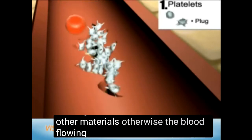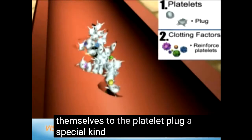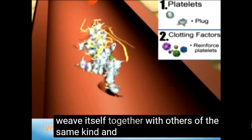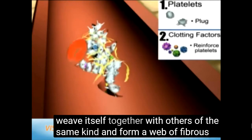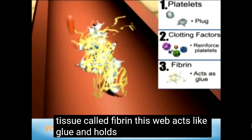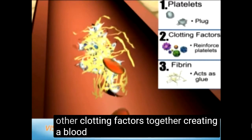Otherwise, the blood flowing past the hole could wash the plug away. A special kind of clotting factor can weave itself together with others of the same kind and form a web of fibrous tissue, called fibrin. This web acts like glue and holds the platelets and the other clotting factors together, creating a blood clot.